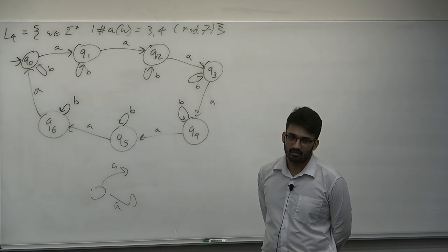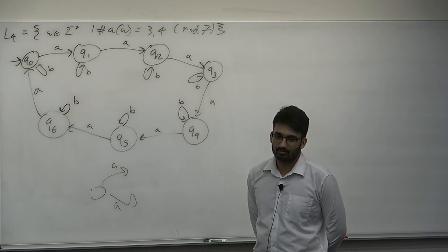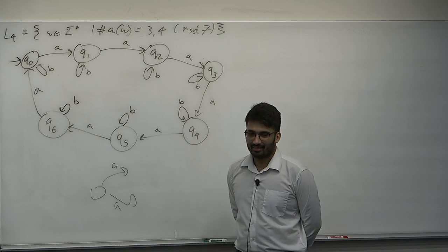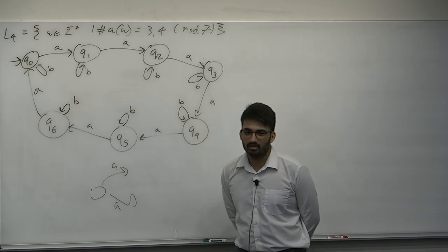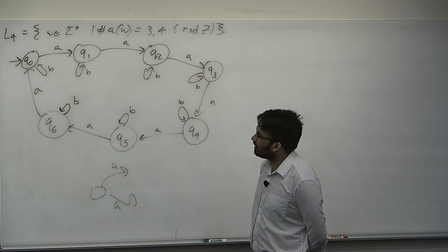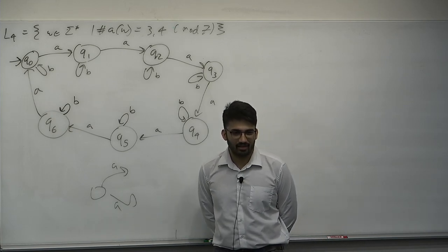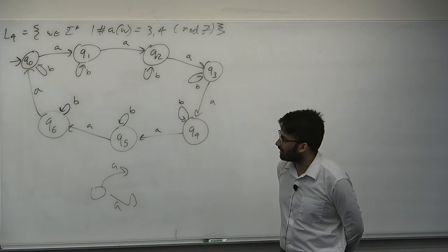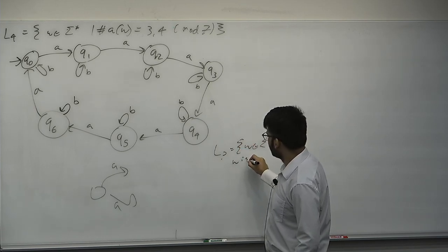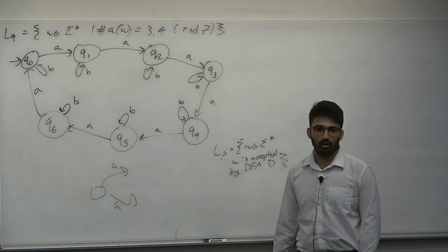A student asks whether every DFA-decidable language has a nice set-builder notation. For every possible DFA, it decides one language, and there may be many DFAs. Here's a way to convert any DFA into set-builder notation: just write it as the set of w in Σ* such that w is accepted by DFA D, where D is defined somewhere. That works, even if it may not be nice.